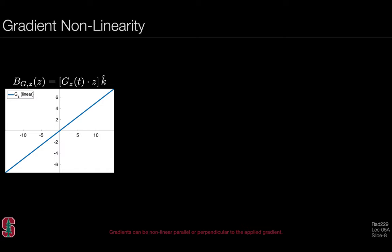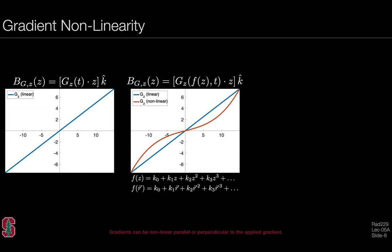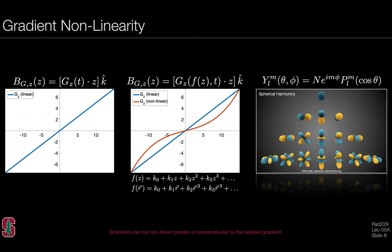What happens in the context of gradient non-linearity? If we have non-linear gradients, we have a different mapping of magnetic field strength as a function of position. Here we've introduced a new term where the Gz gradient depends on some function of space as well as time. Now the map has a different frequency to space mapping that may have some curved form, a quadratic function, cubic function, or expressed in some other way.